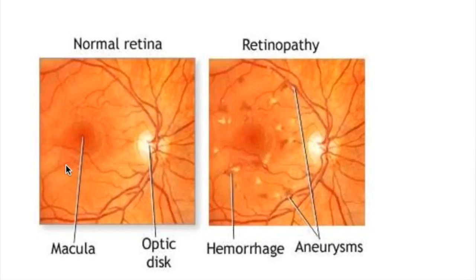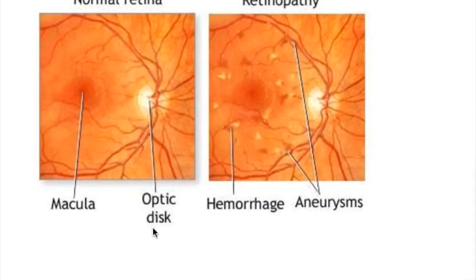Hypertensive retinopathy. In hypertensive retinopathy, in the earlier stages there are AV nipping changes in the direction of the arterioles, then hemorrhages and aneurysms, and in grade four there is optic disc edema.